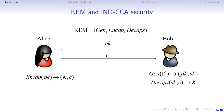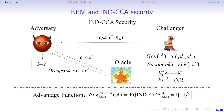A KEM consists of three algorithms: key generation, encapsulation, and decapsulation. In practice, we usually need a CCA-secure KEM. Roughly speaking, the CCA security of a KEM says that an honestly generated session key is indistinguishable from a truly random session key, even though the adversary has the ability of querying the decapsulation oracle.